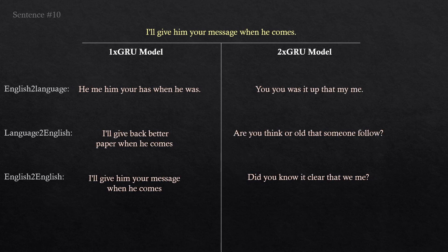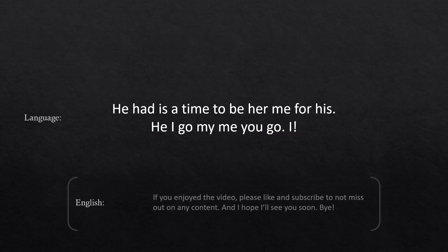This project has truly been fantastical, and I hope you also enjoyed this video. What I've learned is that machine learning is kind of like baking a cake without a recipe — there are so many hyperparameters to tune, which makes it a constant process of tweaking, adjusting, and waiting for the model to train. But the end result can truly be amazing, so I want to encourage all of you to go have a machine learning project of your own. That's it for this video — and you know what? I'll just let the AI do the outro. He had is a time to be her me for his. He, I go my, me you go. I.